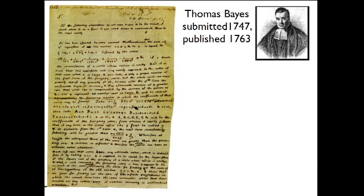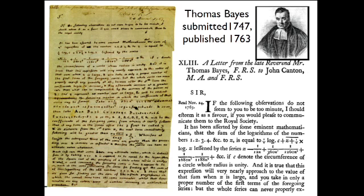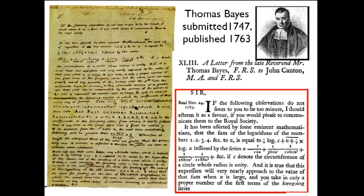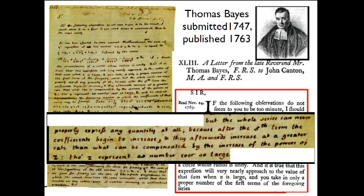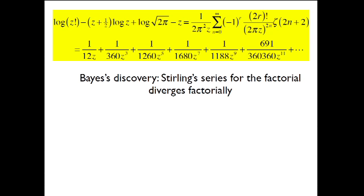Now, Thomas Bayes is better known for Bayesian statistics. But he submitted a paper in 1747 which was not published until 1763 after he died. That's a long, long time lag and it didn't have the archive in those days. Well, here's the paper as he submitted it and they didn't use tech, nor do I, by the way. And the paper was published. And in it he expressed bewilderment that a series that mathematicians were familiar with was not convergent. He was very puzzled by this. It's a series involving a large parameter Z. But the whole series can never properly express any quantity at all because after the fifth term, the coefficients begin to increase and they afterwards increase at a greater rate than what can be compensated by the increase of the powers of Z, though Z represent a number ever so large.